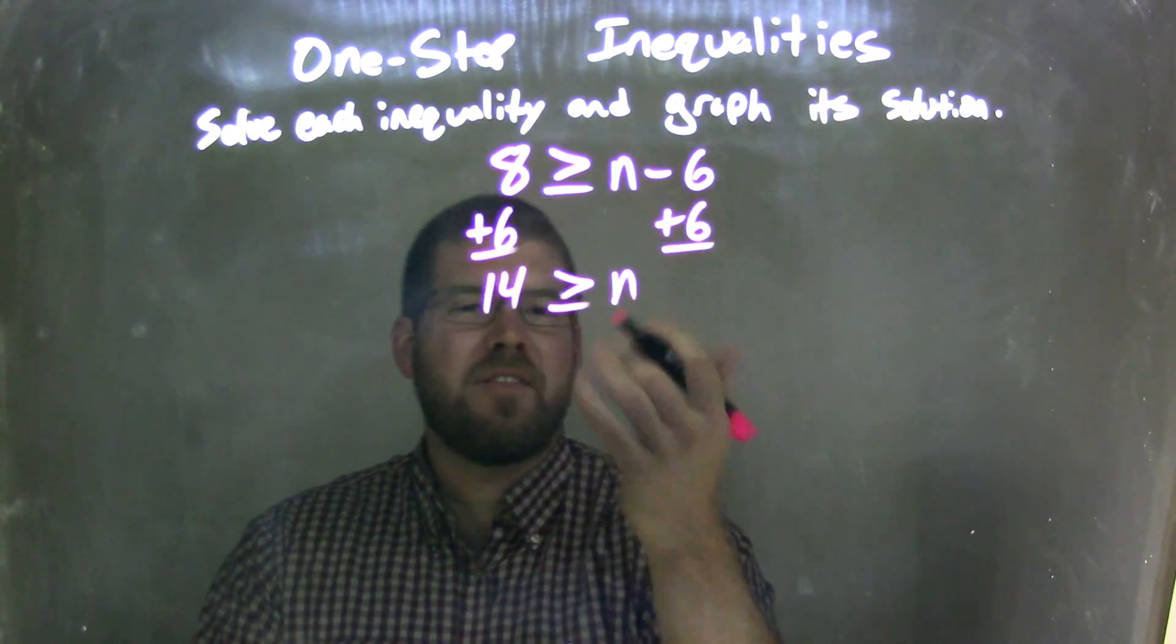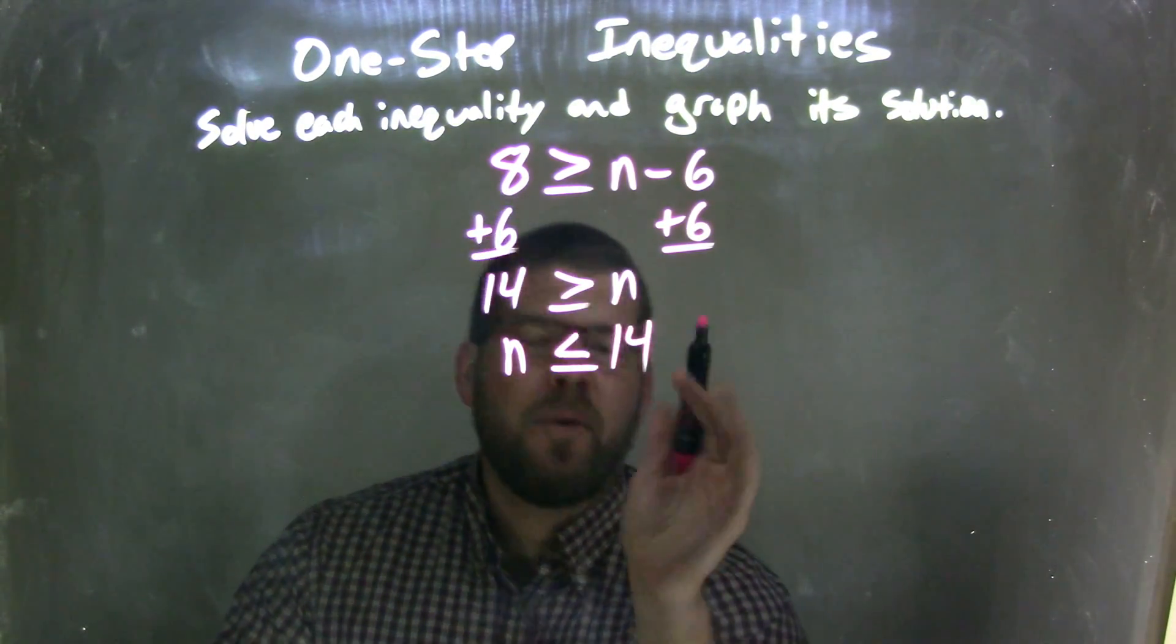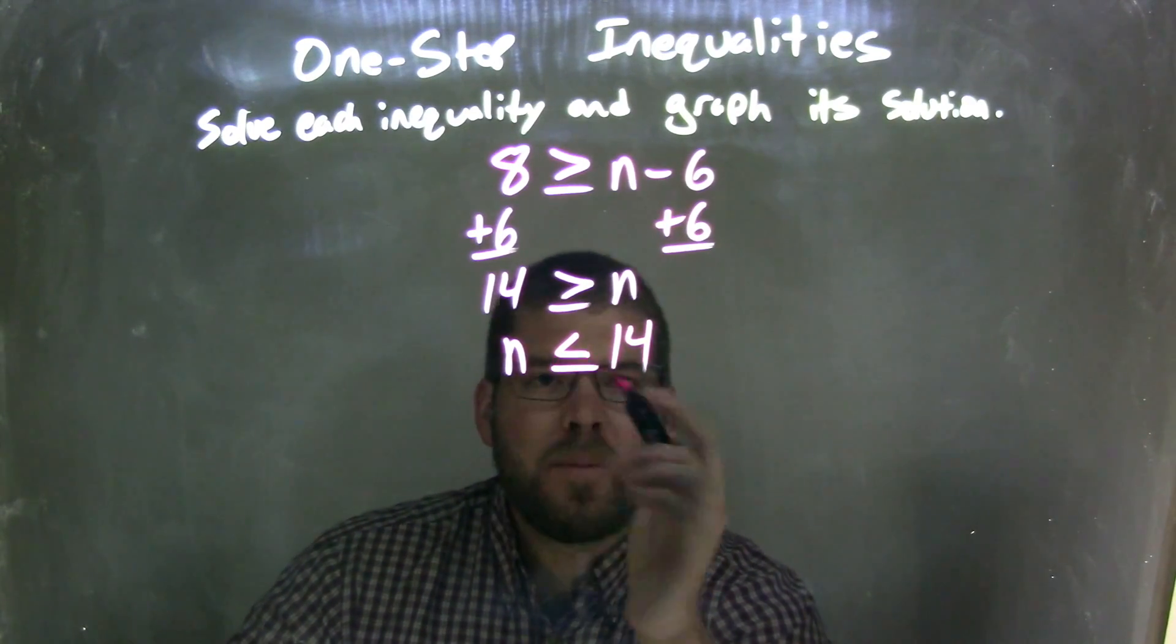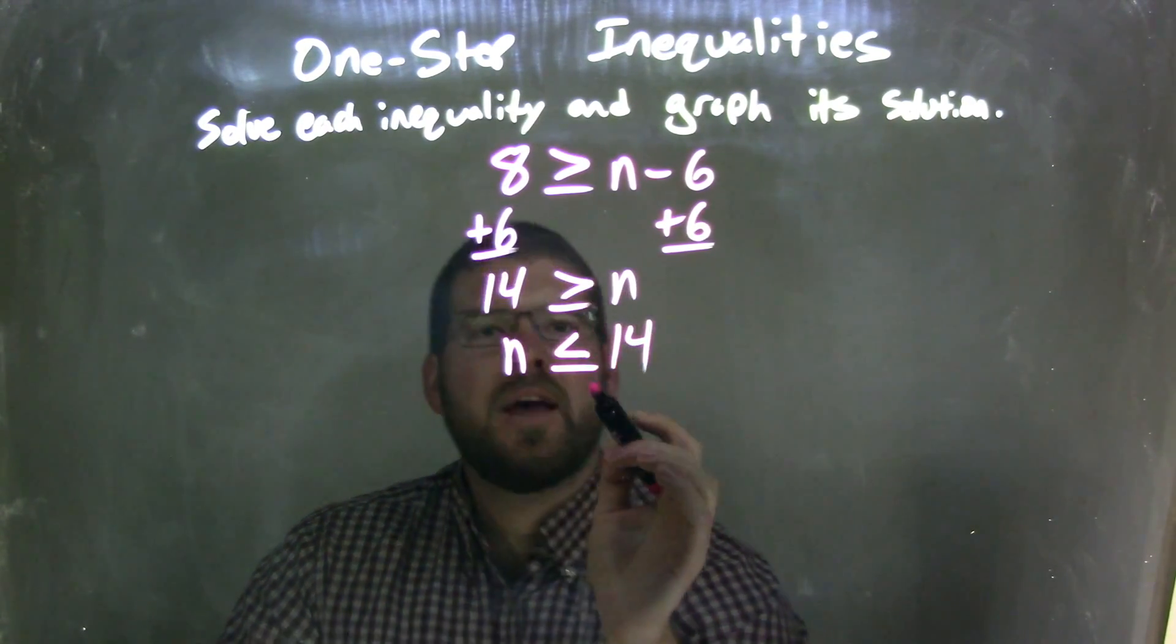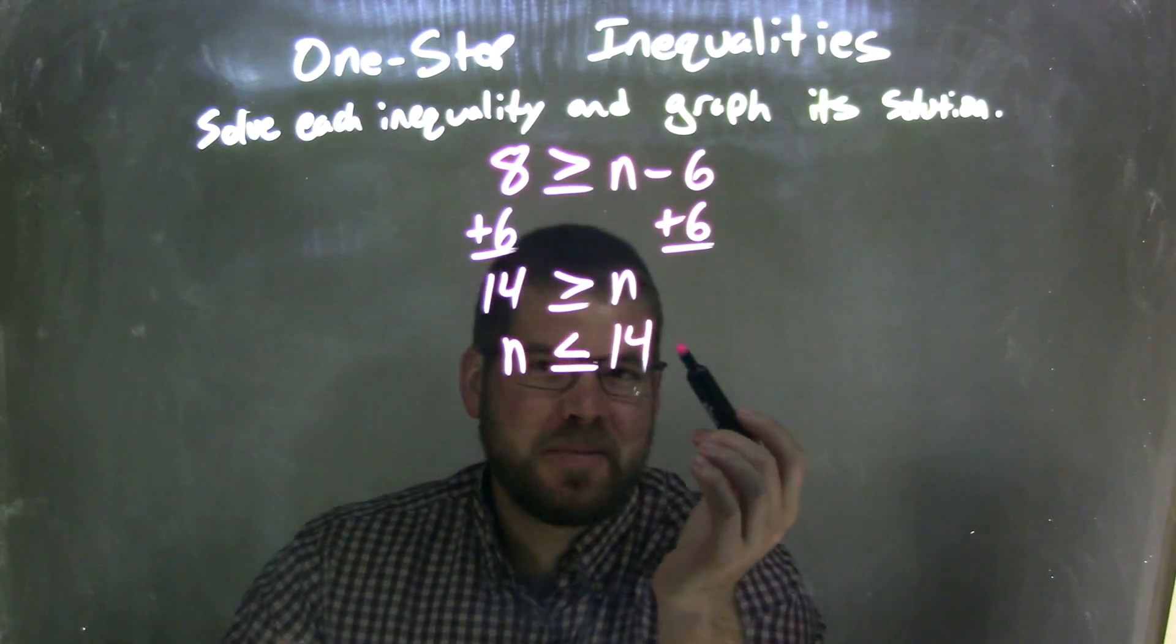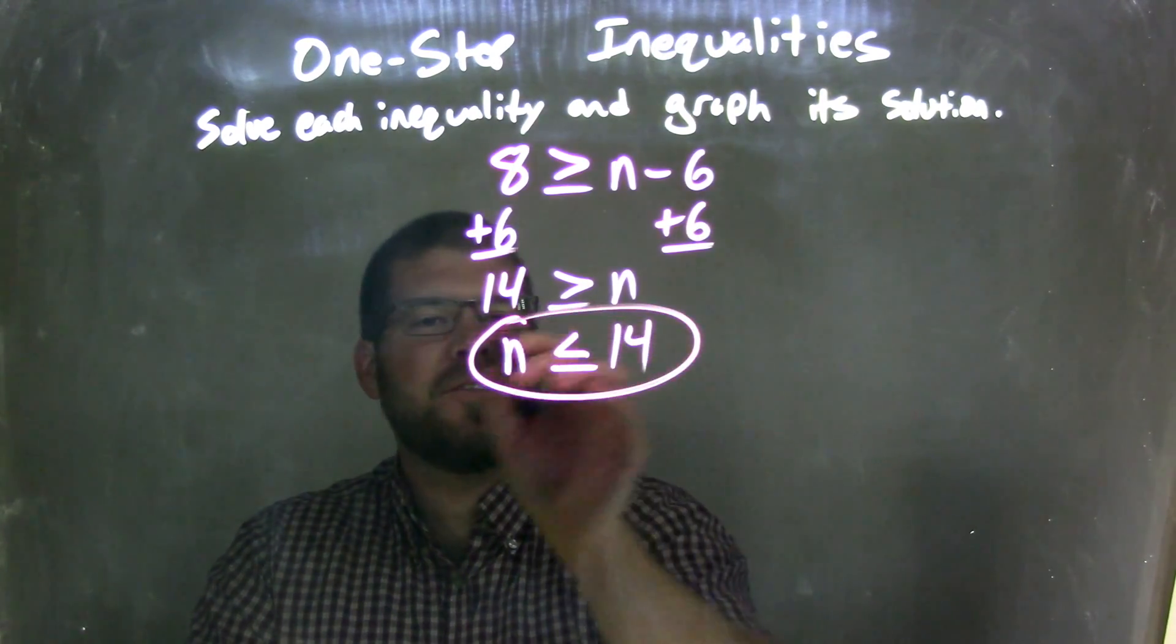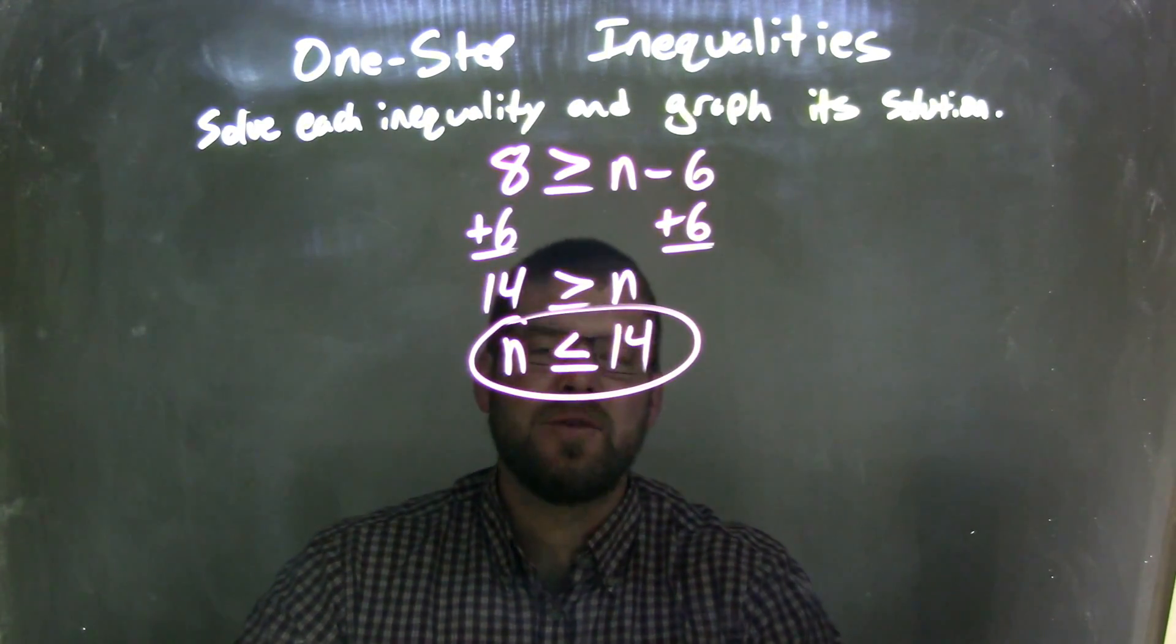So we have 14 is greater than or equal to n. Let's rewrite this and have n come first. n is less than or equal to 14. The way I always remember to do that, when you flip it, you have to flip the inequality as well. And make sure the pointy part is towards the n and the open part is towards the number. So they're the same thing, but written differently, n is less than or equal to 14.